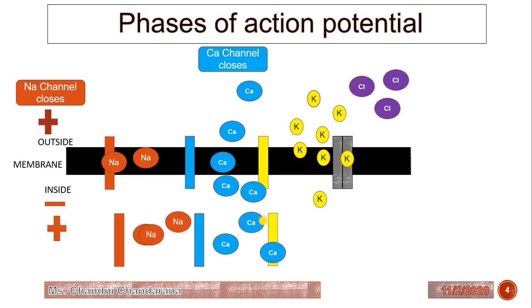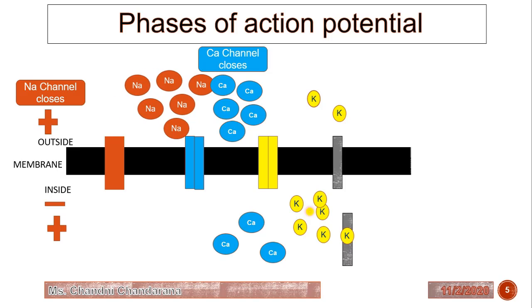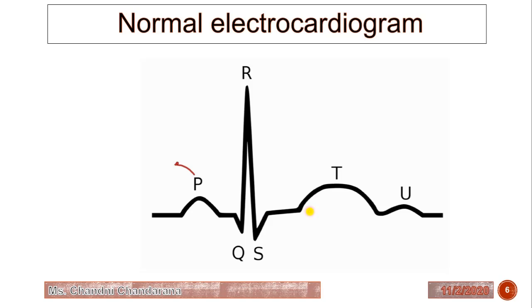After that, the calcium channel closes and there is a rapid outward movement of potassium. Inside becomes more negatively charged compared to outside until phase 4 is reestablished. After that, the sodium-potassium pump opens up. Sodium and potassium are at the wrong side of the pump, so there will be movement of sodium as well as potassium back to their original positions. This is how the action potential works.